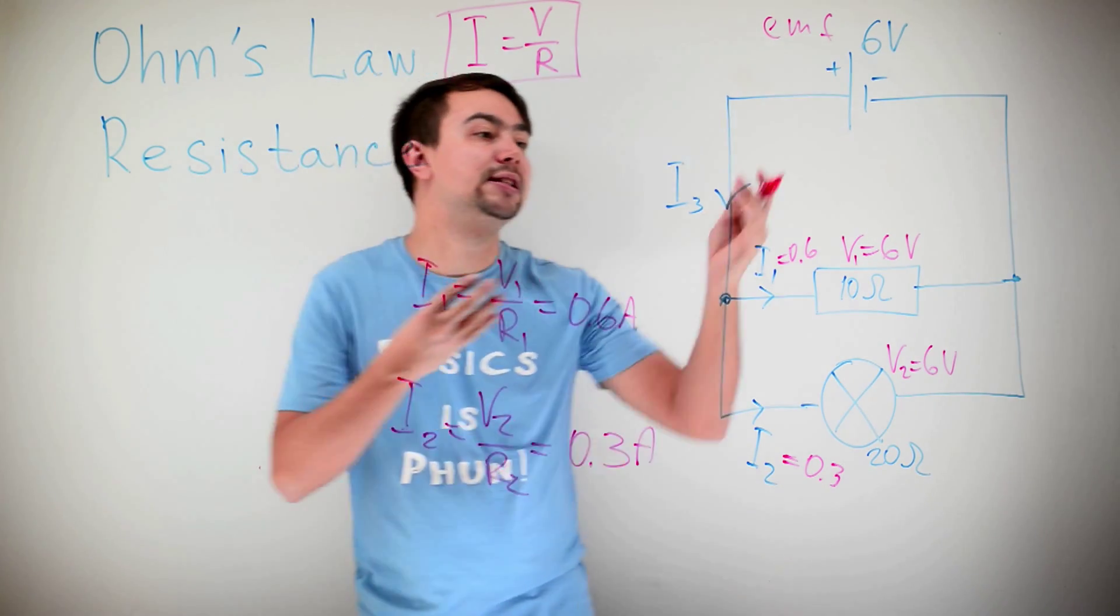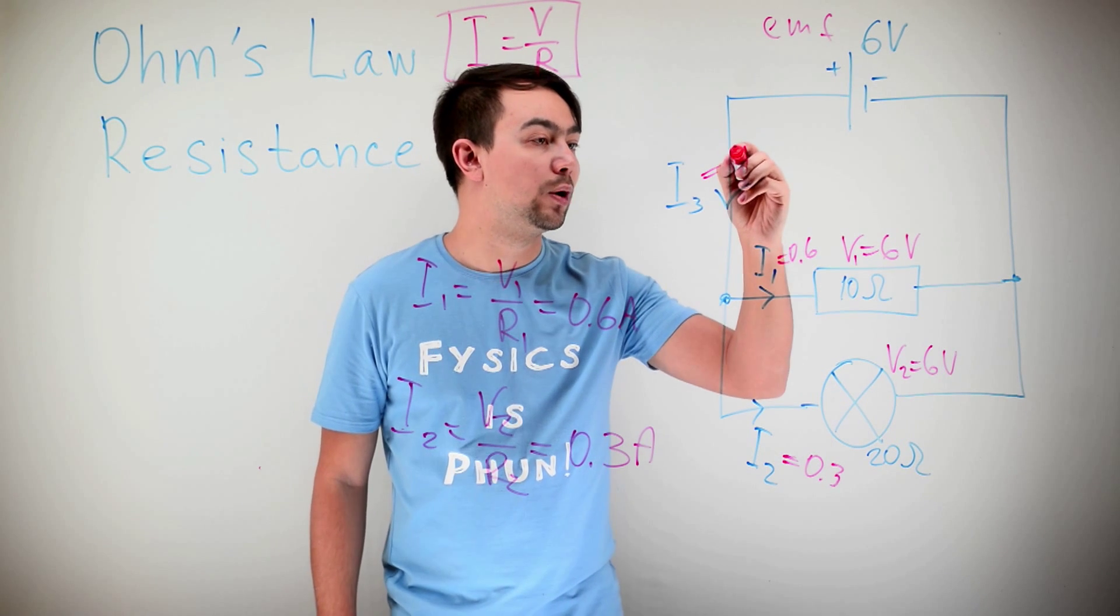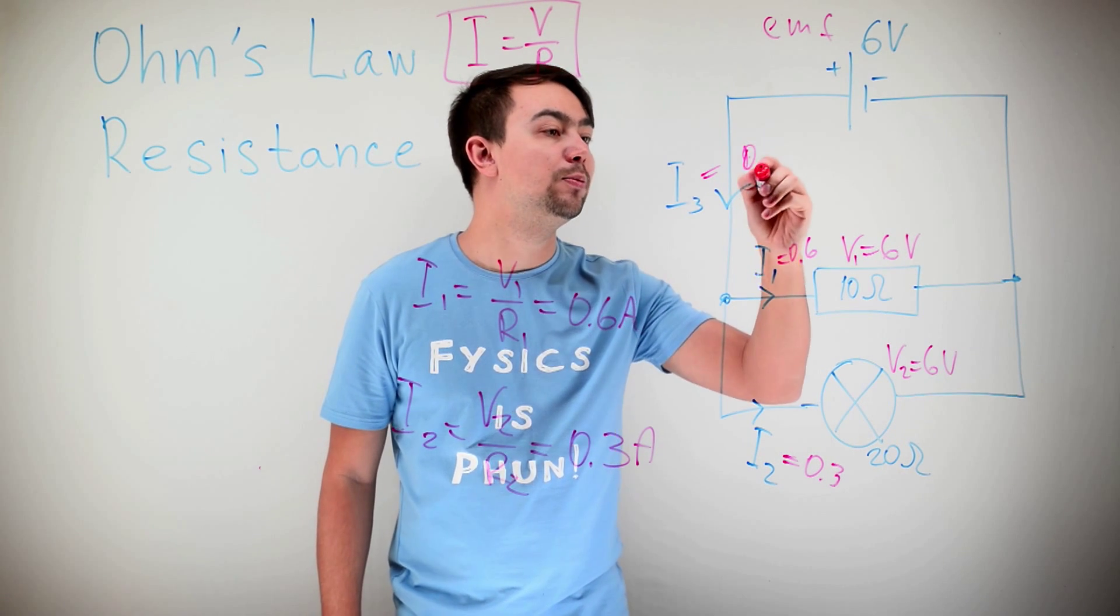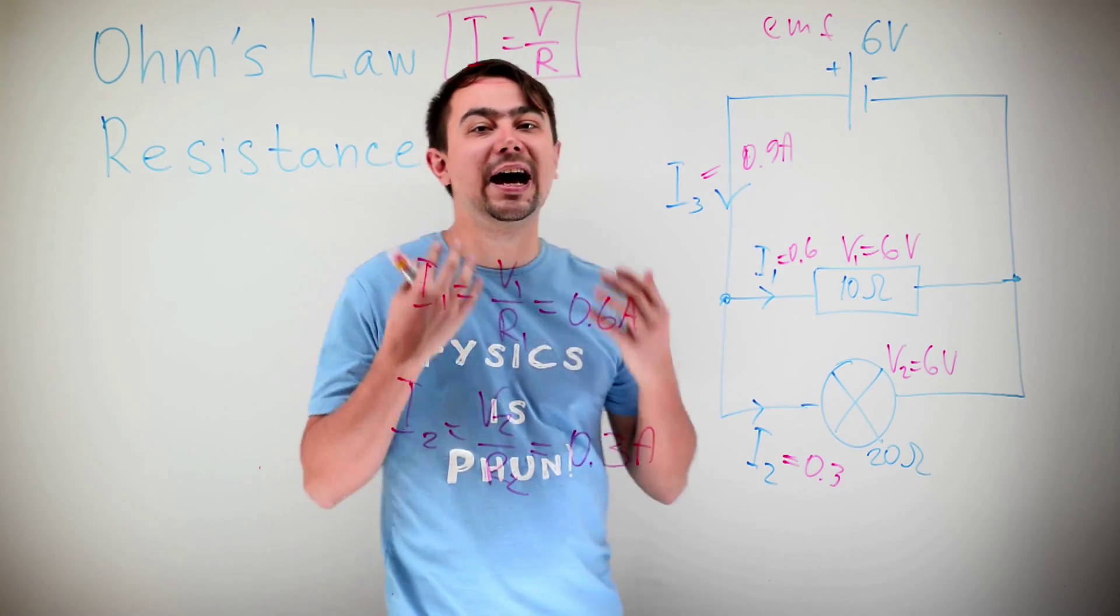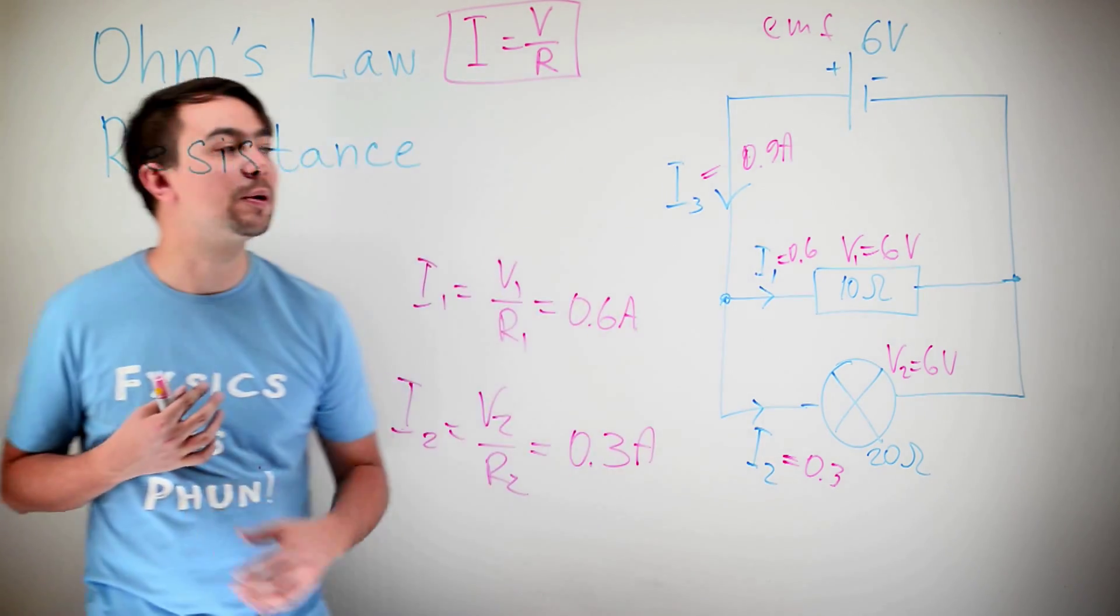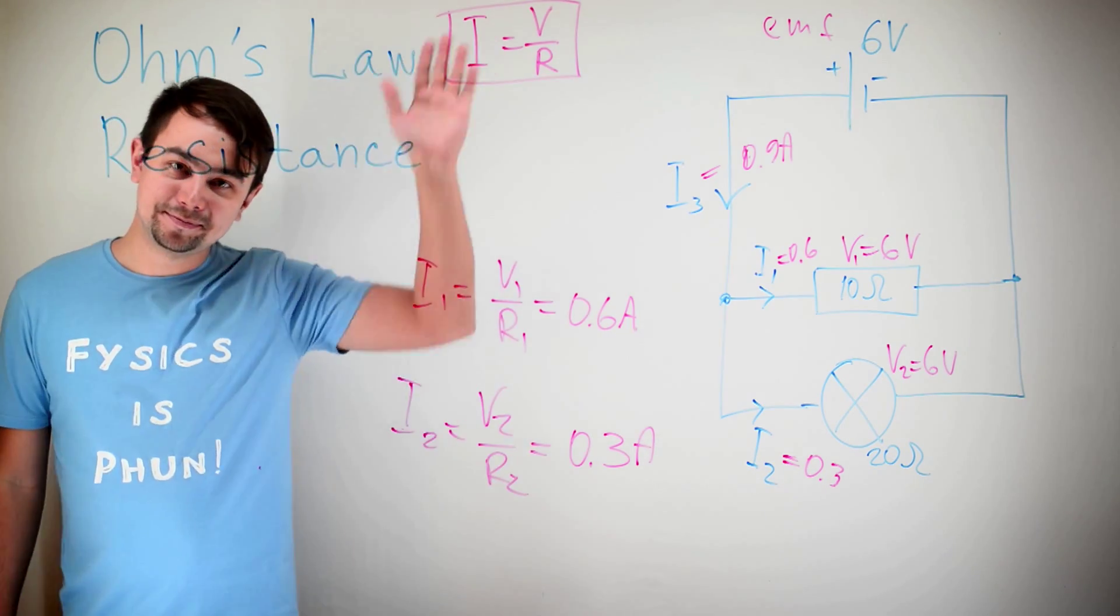Well, and that, of course, means if the current splits, we know that I3 is I1 plus I2. So that's 0.9 amps. To learn more about the ampere and the volt, you can watch my previous video. Here it is. Thank you. Goodbye.